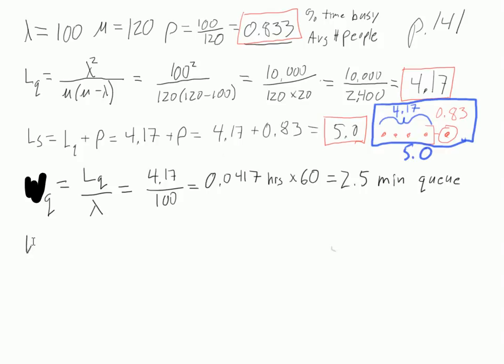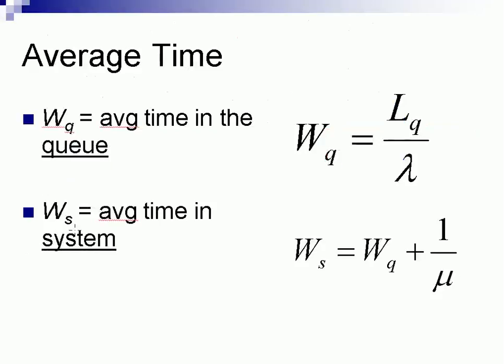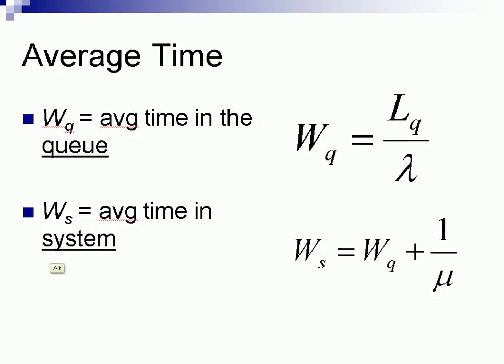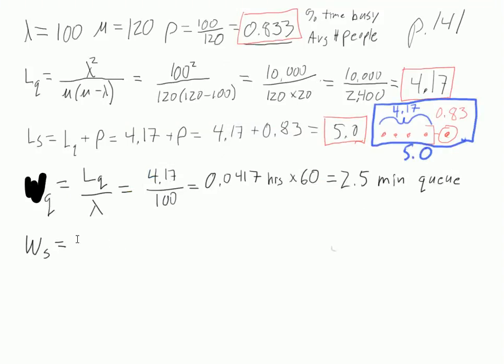The other thing we want to know is how long people spend in the system. So Ws, that's Wq plus 1 over mu. So this is Wq plus 1 divided by mu. Now, the thing to watch out for here is when we use this Wq, do we want to use this in minutes or in hours? Well, when we add these two things together, they both have to be in the same units. Whether that's minutes or hours, either way is fine, but we need to keep it straight. So I'm going to use Wq in terms of hours here. I'll do it again in a second, using minutes, but for now in hours.